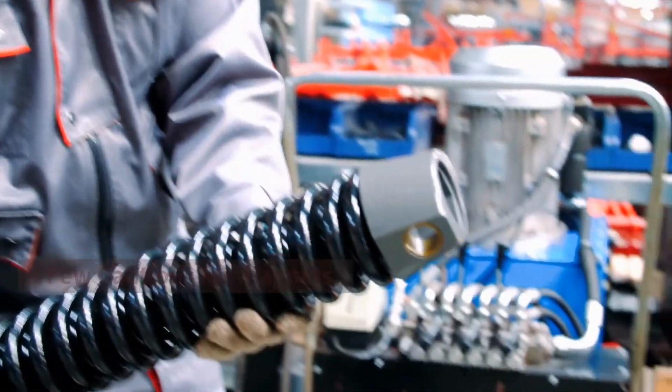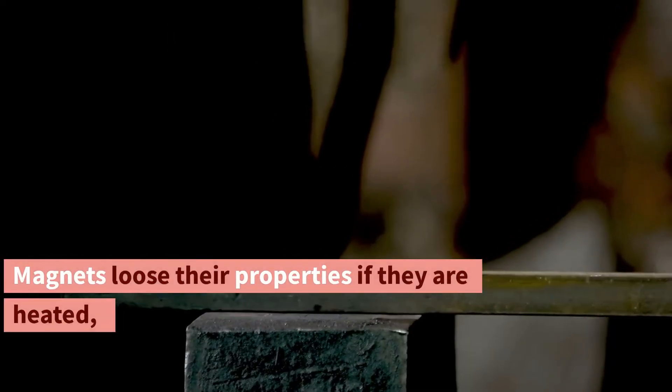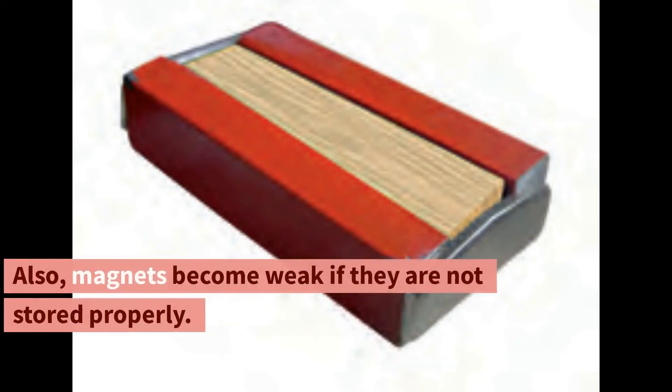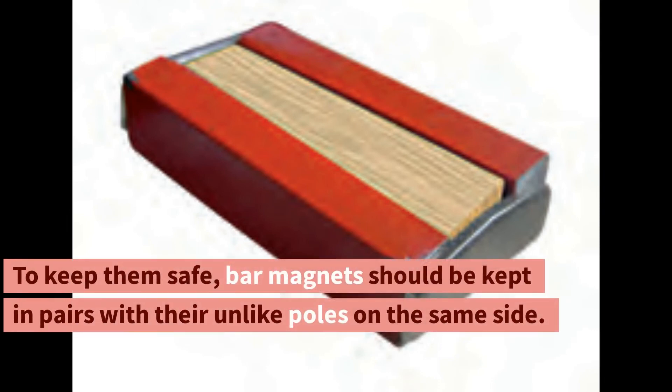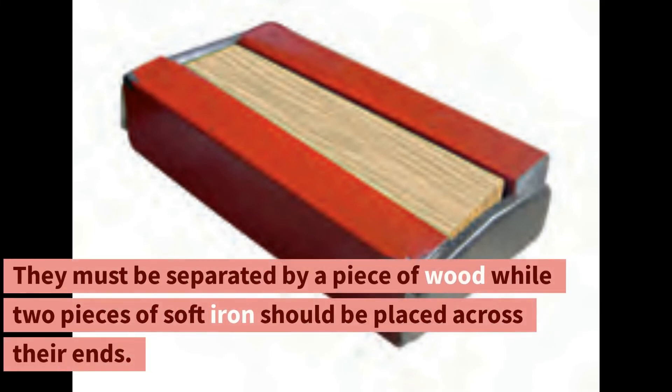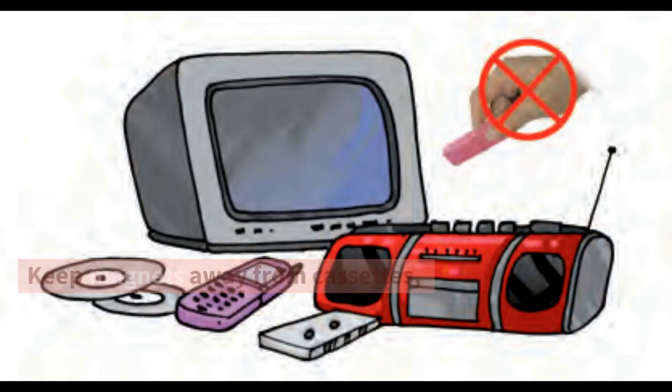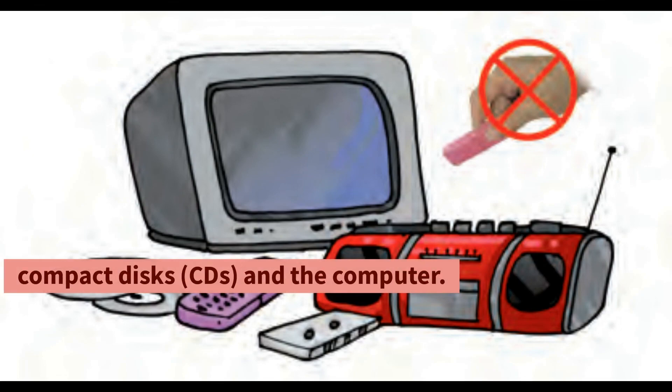A few cautions for magnets. Magnets lose their properties if they are heated, hammered or dropped from some height. Also, magnets become weak if they are not stored properly. To keep them safe, bar magnets should be kept in pairs with their unlike poles on the same side. They must be separated by a piece of wood while two pieces of soft iron should be placed across their ends. For horseshoe magnet, one should keep a piece of iron across the poles. Keep magnets away from cassettes, mobiles, television, music system, compact discs (CDs), and the computer.